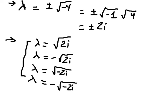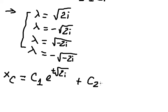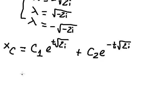So the complementary solution sc is: c1 times e to the power of lambda1 t, plus c2 times e to the power of lambda2 t, plus c3 times e to the power of lambda3 t, plus c4 times e to the power of lambda4 t.